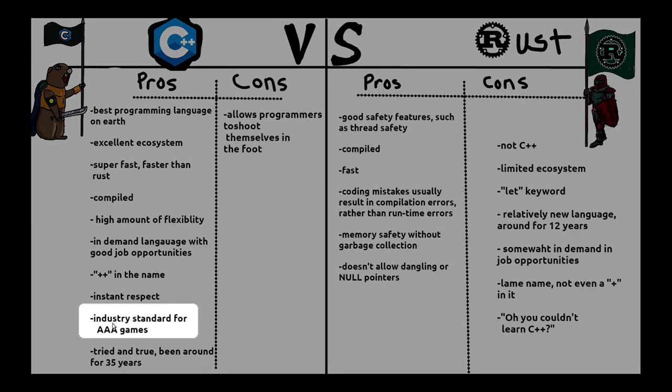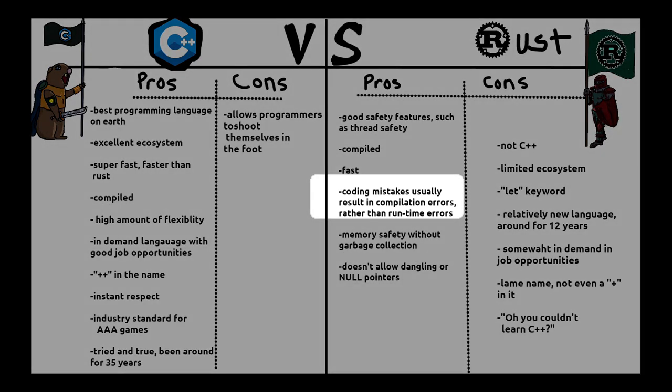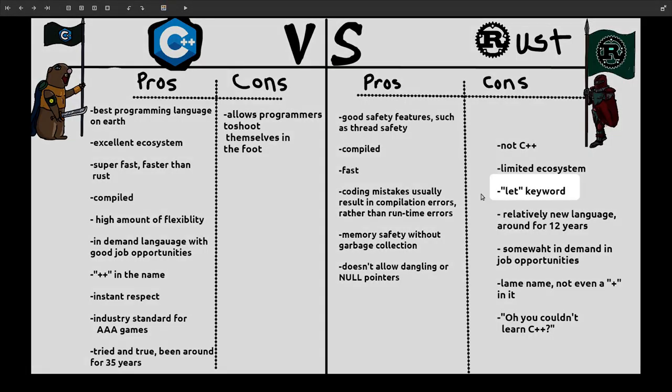C++ has a high amount of flexibility due to its excellent ecosystem and a ton of different libraries. Rust you can do a lot with, but less than C++, simply due to having fewer libraries as a newer language. In the game industry, C++ is definitely a better option — it has a lot more tools and utilities like Unreal Engine and Unity. There are some up-and-coming game engines that support Rust, but they're not as well established. A pro for Rust is that coding mistakes usually result in compilation errors instead of runtime errors, resulting in a lot less undefined behavior, which is easier to track down for debugging.